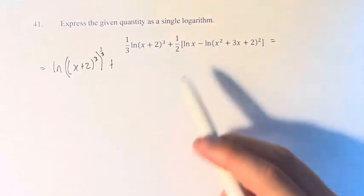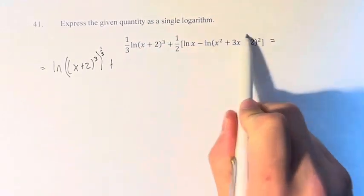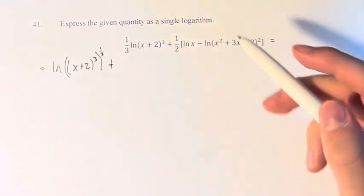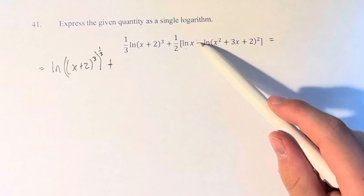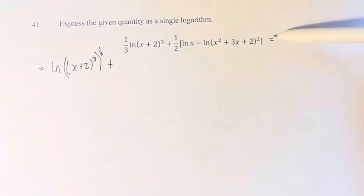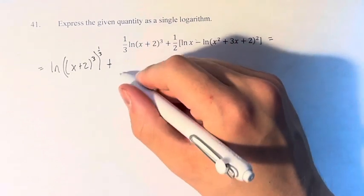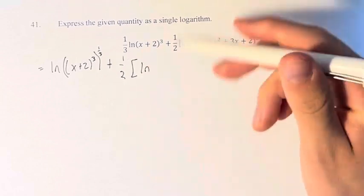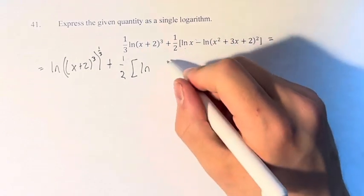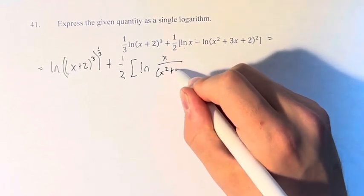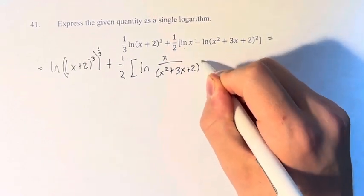We can do a similar thing here with the one-half, but first let's combine these two within the brackets. So we have the natural log of x minus the natural log of this squared. When you have one log minus another and they have the same base, what you can do is say this is equal to one-half, don't forget that, but times a single logarithm of the first one divided by the second. So x over x squared plus 3x plus 2 squared.